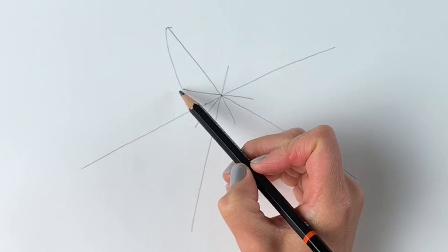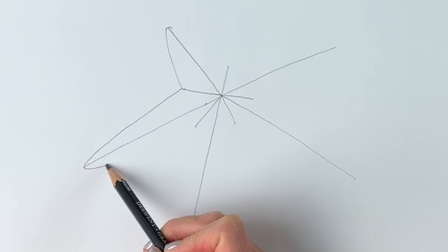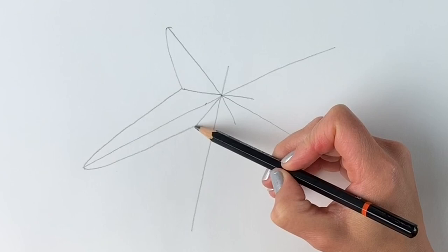So from here we're just going to draw a line coming to the end of this one. Make it curved at the end. Bring it in until it hits this little one. We're going to do that again. So bring it down.